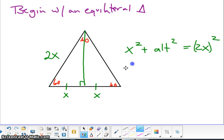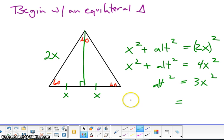And when you simplify that, we're going to have altitude squared equaling 4X squared, and then subtracting both sides by X squared leaves you with the square root. So my altitude, I'll just call that A, is going to be the square root of 3X squared.